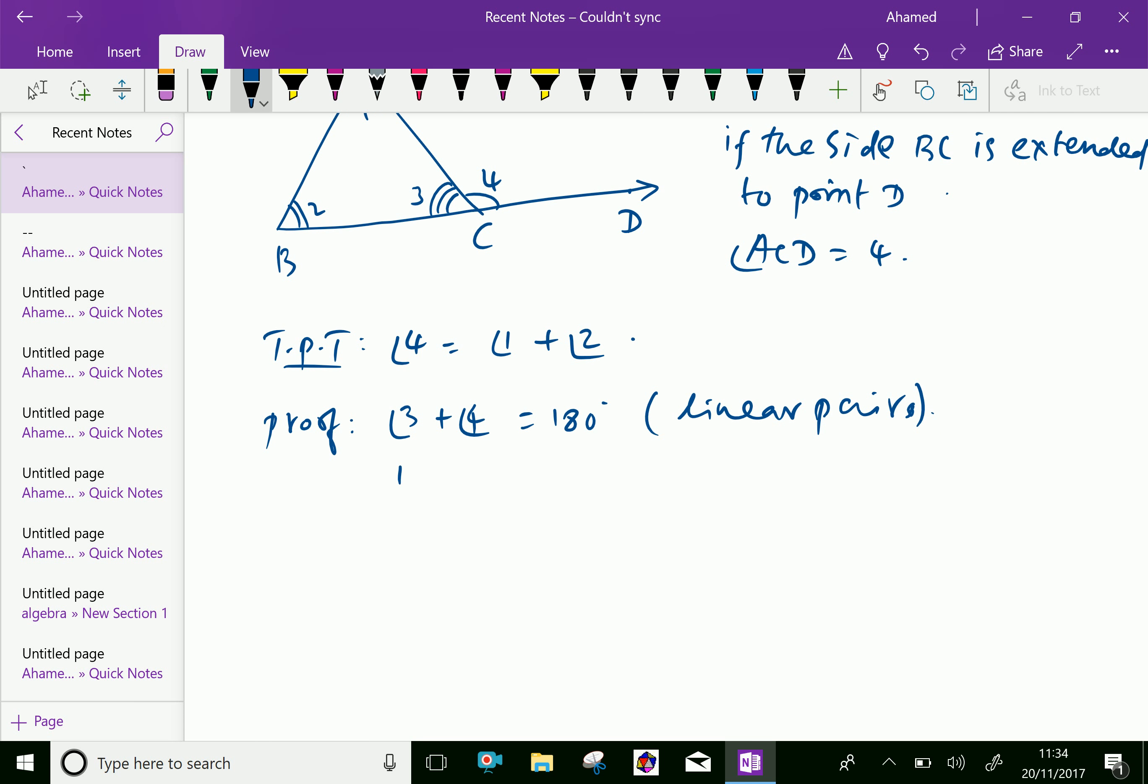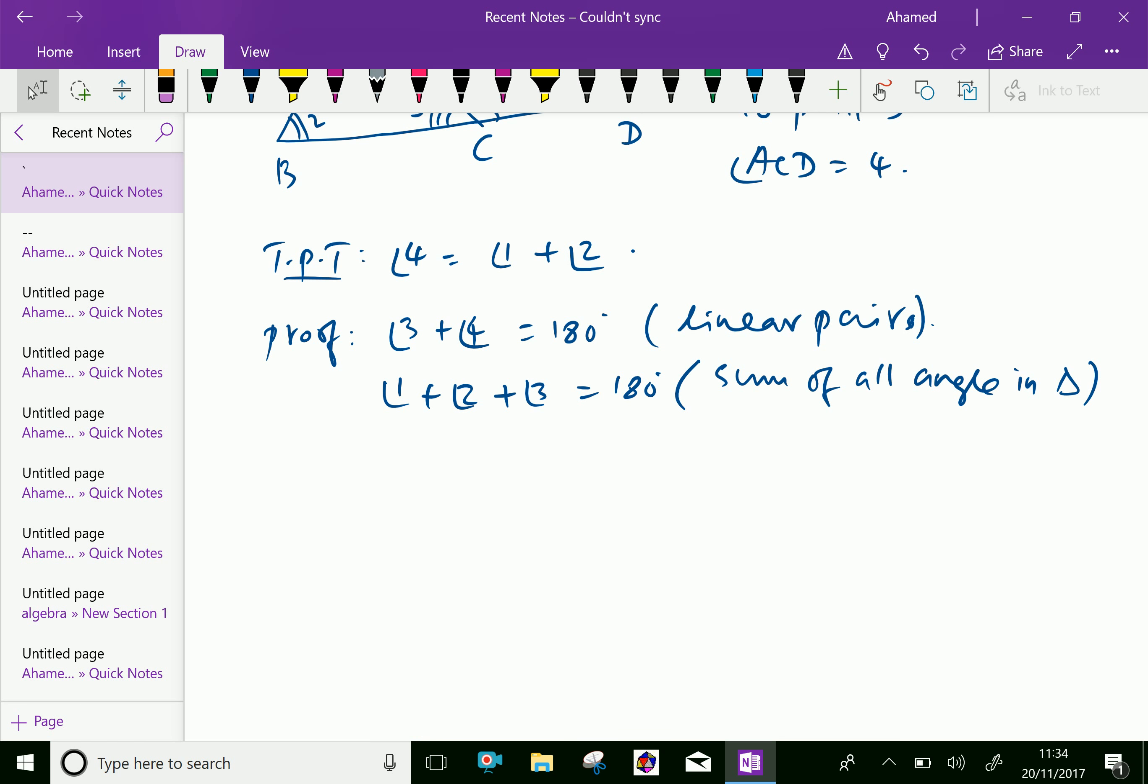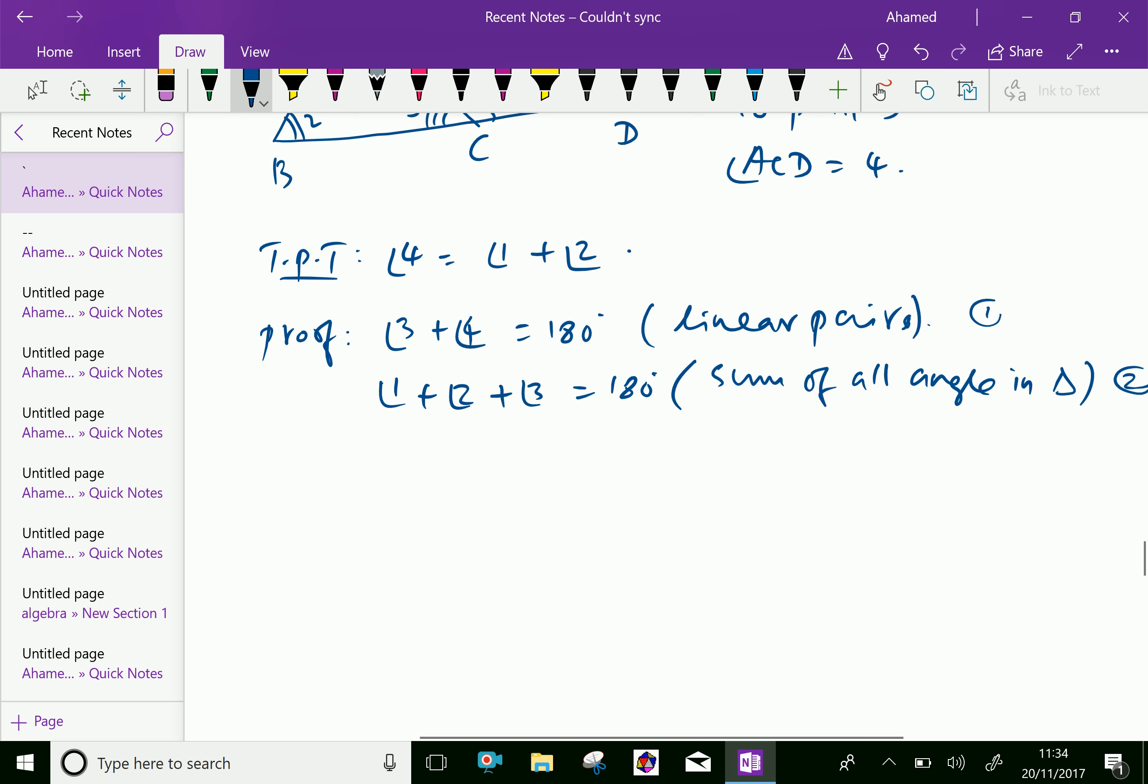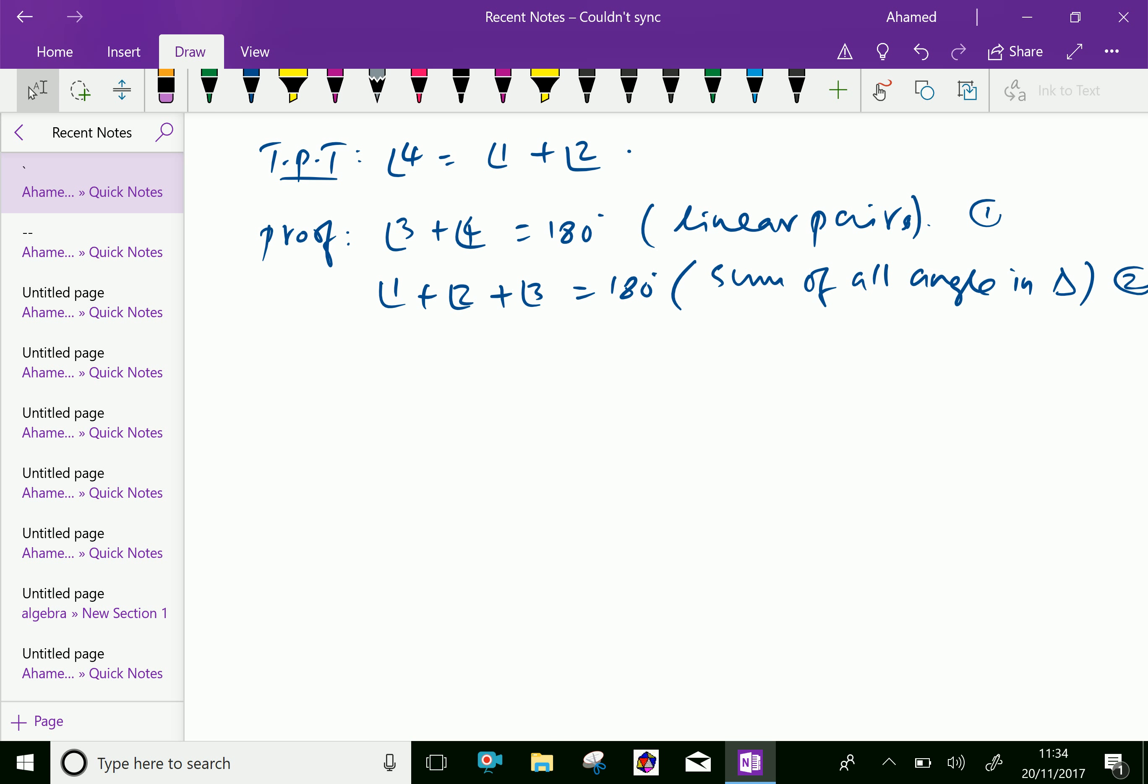Also, we know that angle 1 plus angle 2 plus angle 3 equals 180 degrees, the sum of all angles in a triangle. Therefore, angle 3 plus angle 4 equals angle 1 plus angle 2 plus angle 3.